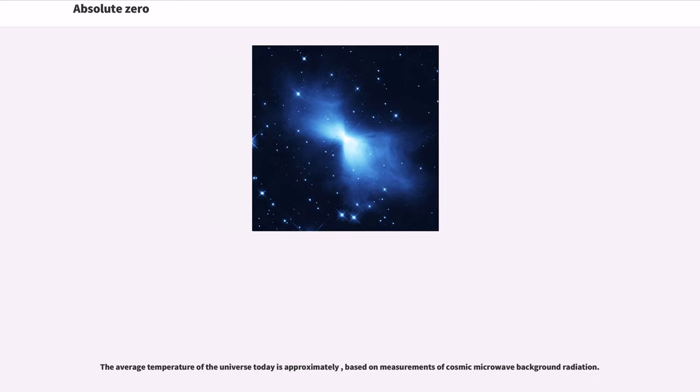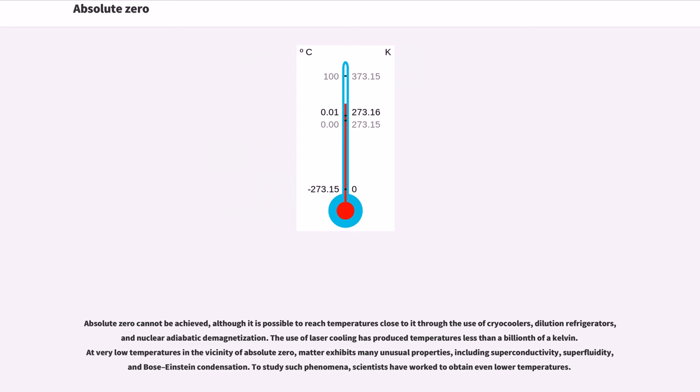The average temperature of the universe today is approximately 2.73 Kelvin, based on measurements of cosmic microwave background radiation. Absolute zero cannot be achieved, although it is possible to reach temperatures close to it through the use of cryocoolers, dilution refrigerators, and nuclear adiabatic demagnetization. The use of laser cooling has produced temperatures less than a billionth of a kelvin. At very low temperatures in the vicinity of absolute zero, matter exhibits many unusual properties, including superconductivity, superfluidity, and Bose-Einstein condensation. To study such phenomena, scientists have worked to obtain even lower temperatures.